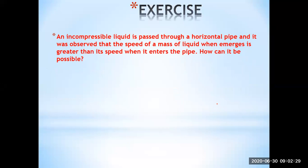An incompressible liquid is passed through a horizontal pipe, and it was observed that the speed of a mass of liquid when it emerges is greater than its speed when it enters the pipe. How can this be possible?